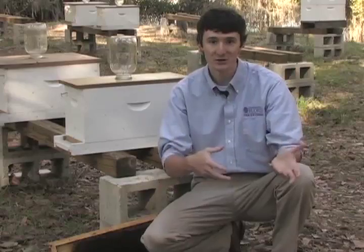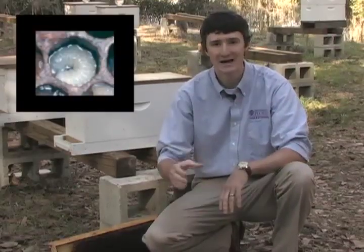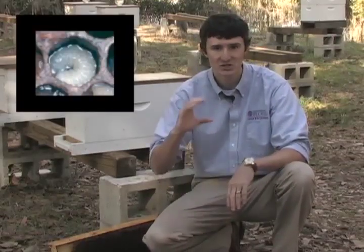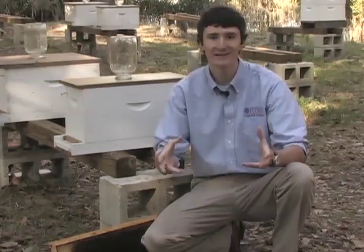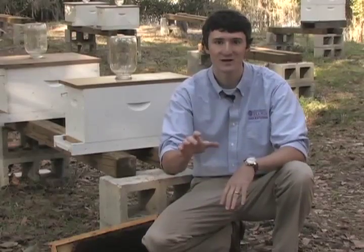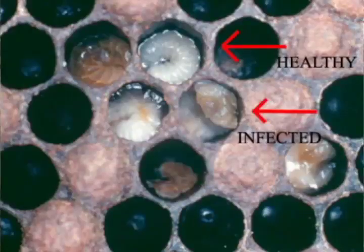The best way to appreciate what a sick larva looks like is to understand what a healthy larva looks like. A healthy developing honeybee larva lies in the bottom of a cell in the shape of the letter C — that's why we call them C-shaped larvae. That larva should be not twisted, glistening, and pearly white. European foul brood does the opposite: the larvae are yellow-brown, no longer glistening, and twisted in the cell.